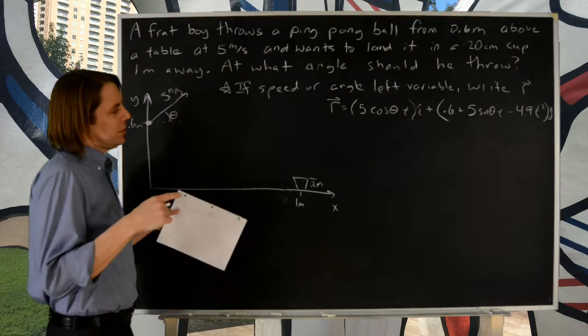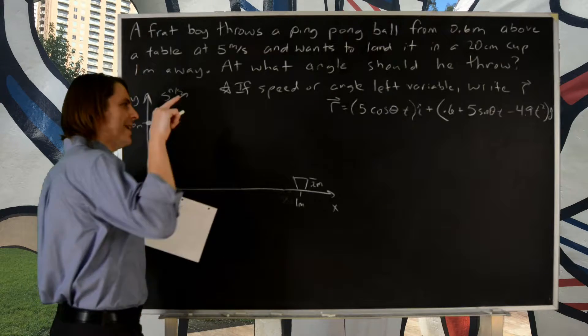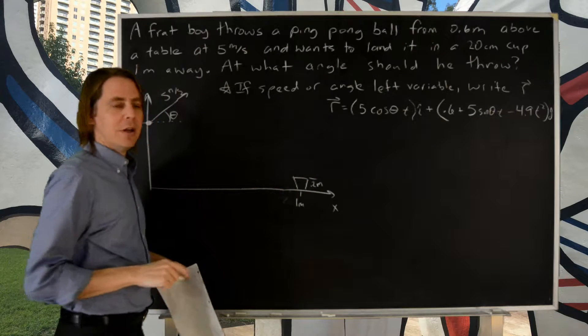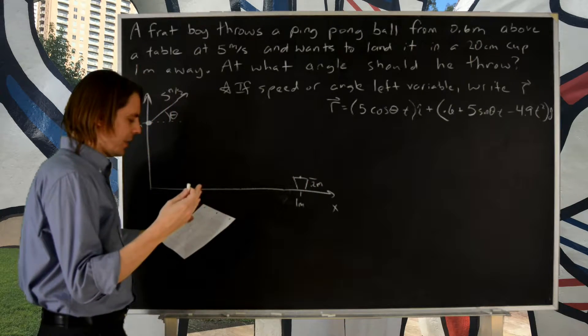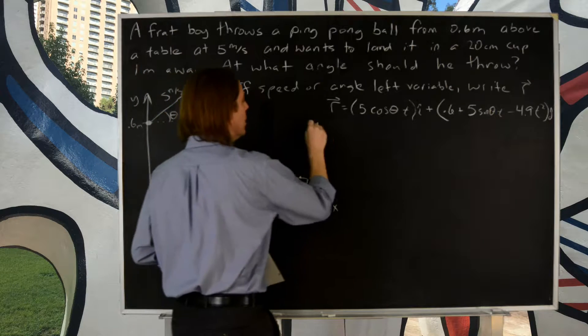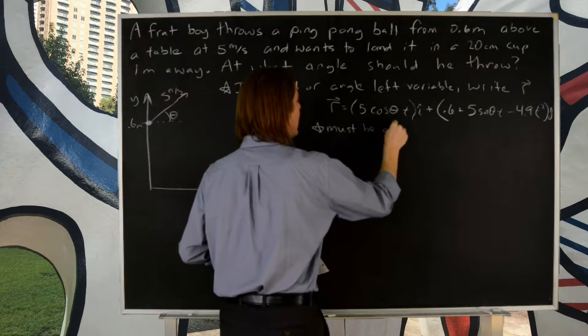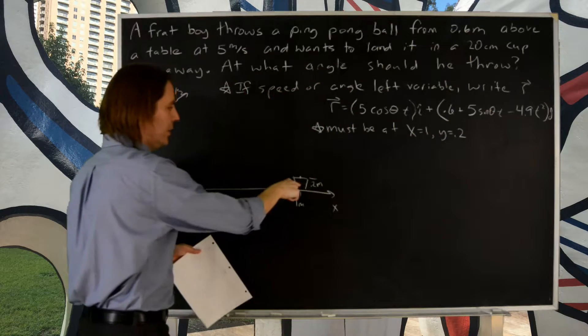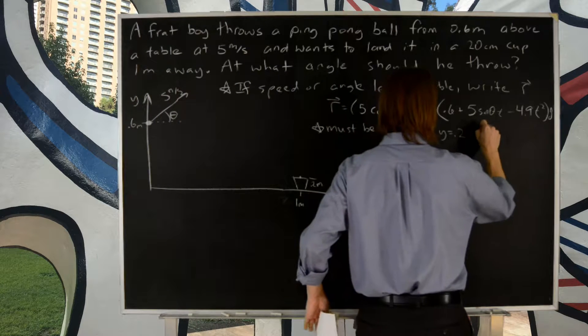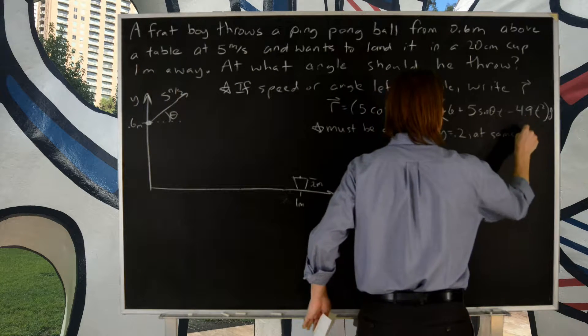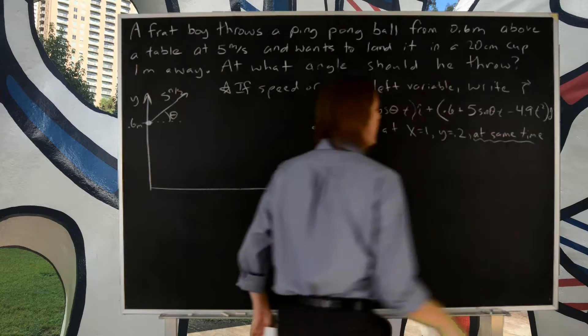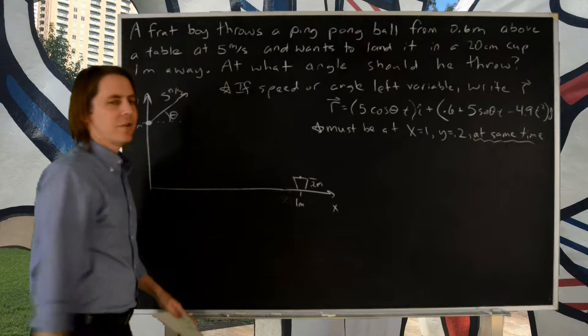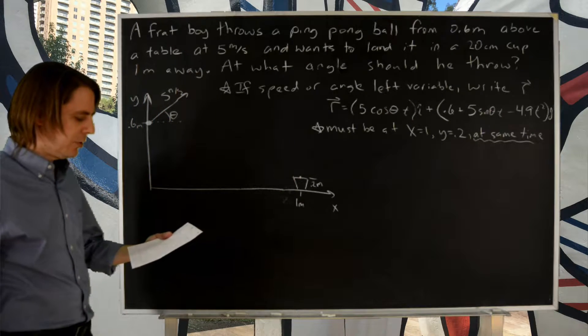So now, remember, you just apply the problem to that expression. The problem says he makes it, it goes into here. So what does that mean? That means at some time it must be at x equals 1, y equals 0.2, at the same time. That's the key. At the same time. It could easily be at x equals 1 at some time and y equals 0.2 at some other time, but if they're at the same time then it's going to land in the cup. That's really the way we're going to do this.